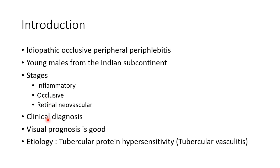Eales disease is a clinical diagnosis and it is a diagnosis of exclusion. The visual prognosis is good in cases of Eales disease. The etiology of Eales disease is still unclear. It is thought to be due to tubercular protein hypersensitivity, and some patients may even have tubercular vasculitis.